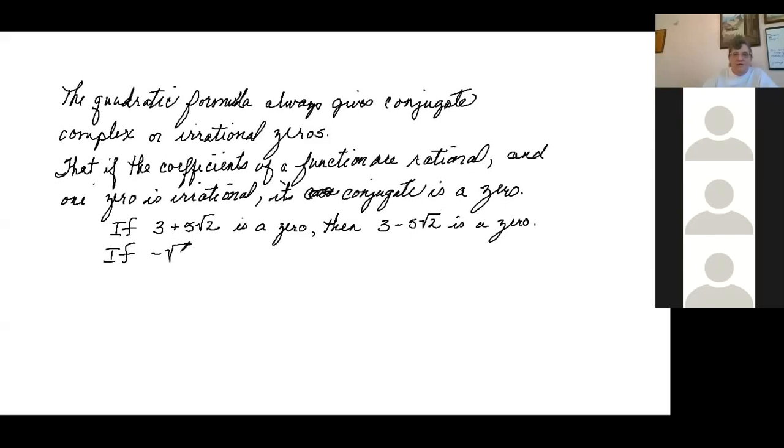If negative square root of seven is a zero, then the positive square root of seven is a zero. The term that you change the sign in front of is just the term with the radical. Notice that these both have positive threes. The second rule is very much the same.